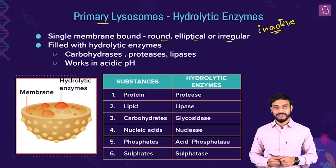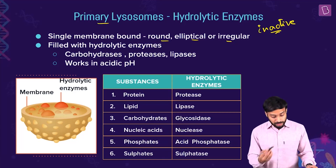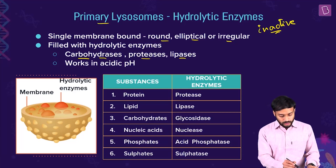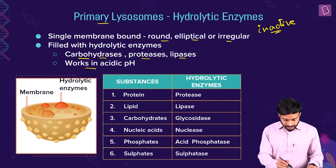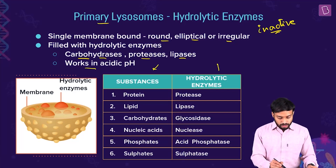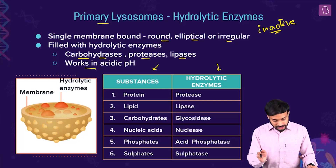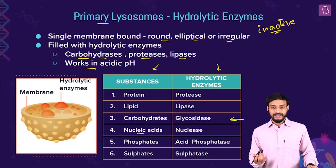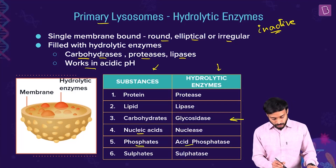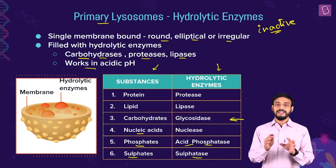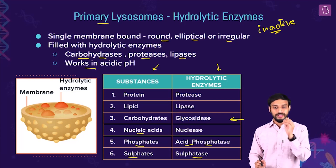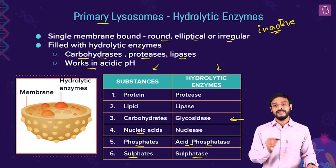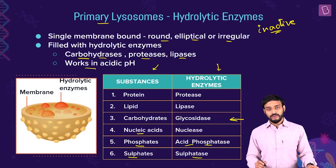Lysosomes have many functions. They help in digestion of carbohydrates, proteins, and lipids. The hydrolytic enzymes they contain include: proteases for protein digestion, lipases for lipid digestion, glycosidases for carbohydrates, nucleases for nucleic acids, acid phosphatase, and sulfatases. These enzymes generally work at acidic pH. The enzymes are named based on their substrate and function.